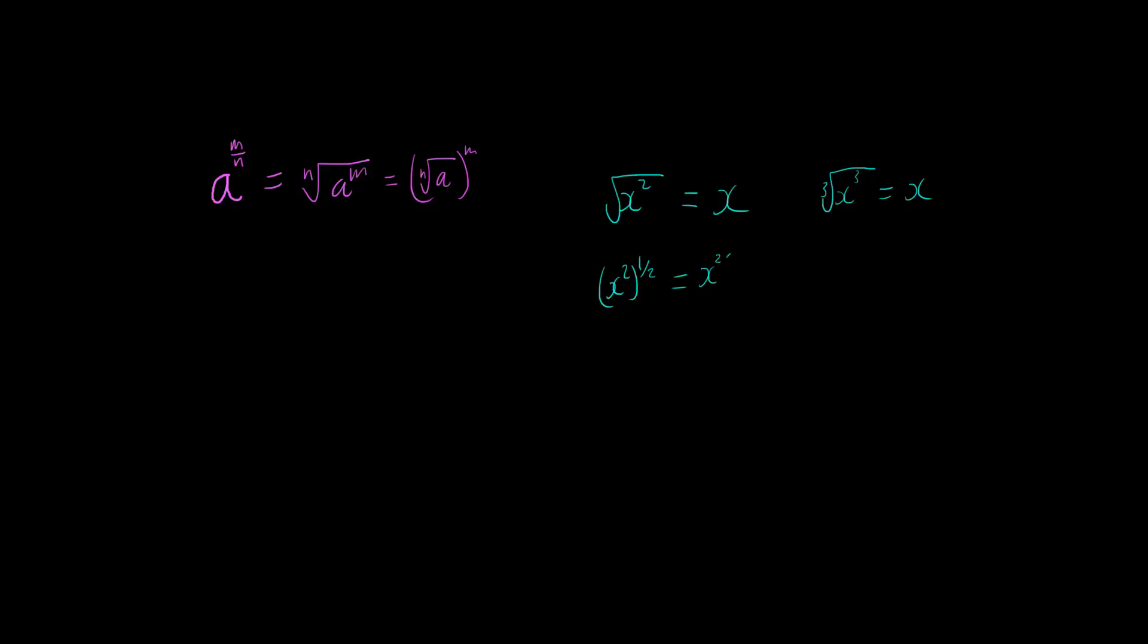Now that means if we use third index law the two powers are multiplied so I'd have x to the power of two times one-half which is x to the power of one because two times one-half is one which is just x.